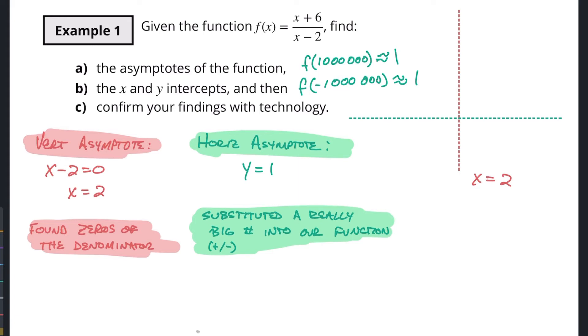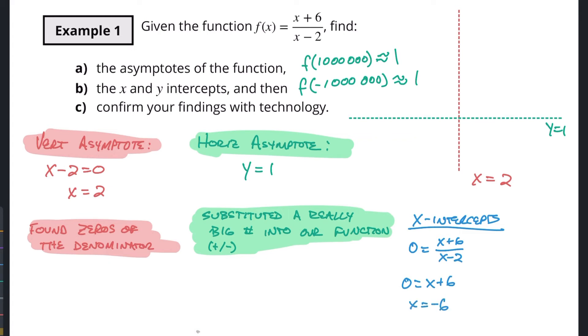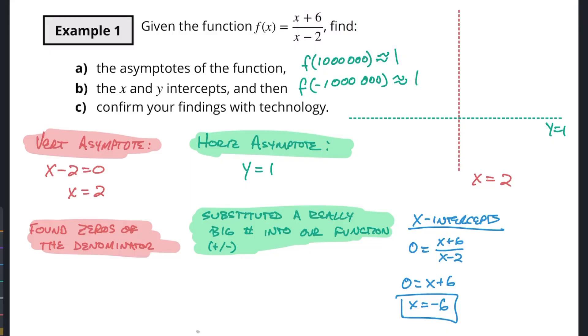Now let's find the x and y-intercepts. To find the x-intercept, set y = 0: 0 = (x + 6)/(x - 2). Multiply both sides by (x - 2) to get 0 = x + 6, so x = -6 is the x-intercept. This makes sense because a fraction equals zero when the numerator equals zero. Plugging in -6 gives zero over something, and zero over anything is always zero.